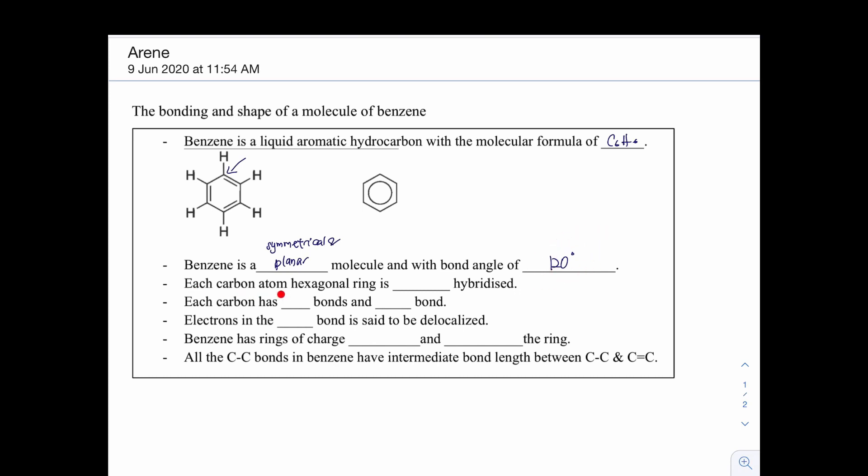And each carbon atom's hexagonal ring is sp2 hybridized. Now if you look at each carbon, it has 3 sigma bonds and also 1 pi bond.